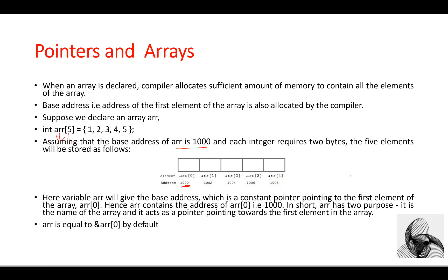The elements are stored as ARRR[0], ARRR[1], ARRR[2], ARRR[3], and ARRR[4]. In this case, ARRR gives the base address, which is a constant pointer pointing to the first element ARRR[0]. ARRR contains the address of ARRR[0], which is 1000. By default, ARRR is equal to &ARRR[0].